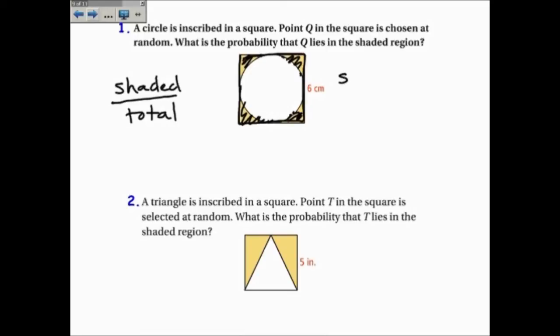So it's the square minus the circle, and that'll give me the shaded area. Now, the square has, it's six by six, or 36 centimeters squared. The circle is pi times the radius squared. Now, be careful. The radius is not six. The radius is going to be half of six, or three centimeters.